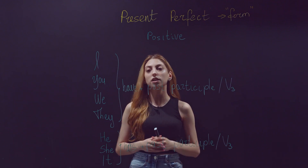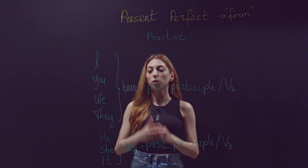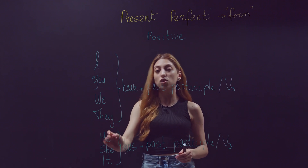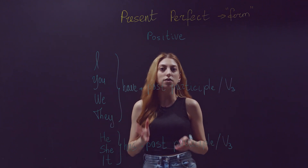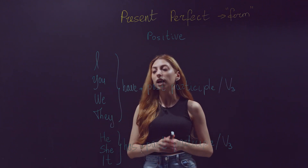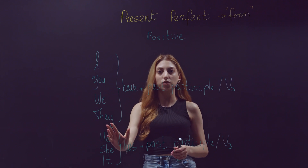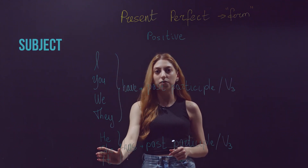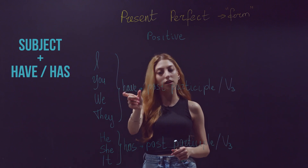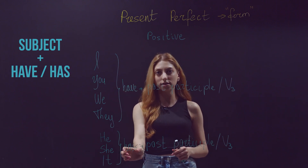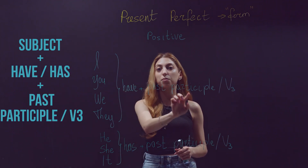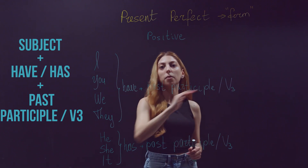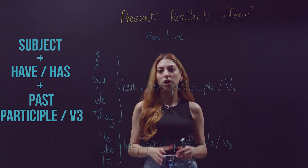What do we have here? Do you remember: I, you, we, they, he, she, it? Of course you do — these are our subjects. The structure is: subject + have or has + past participle. What is past participle? This is the third form of the verb. In English we have two types of verbs: irregular verbs and regular verbs.